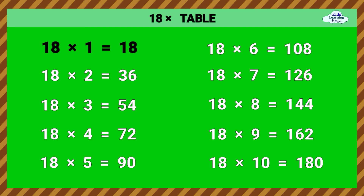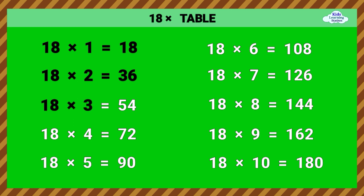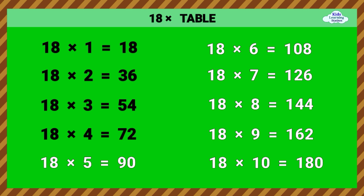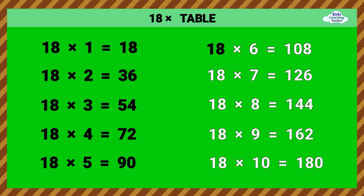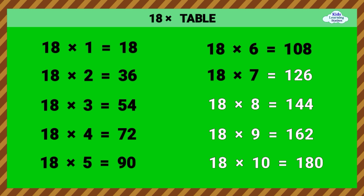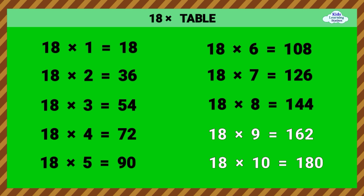Eighteen times table. 18 times 1 equals 18. 18 times 2 equals 36. 18 times 3 equals 54. 18 times 4 equals 72. 18 times 5 equals 90. 18 times 6 equals 108. 18 times 7 equals 126. 18 times 8 equals 144.